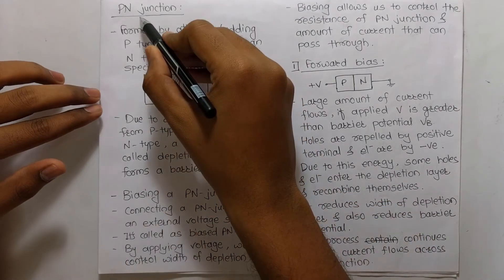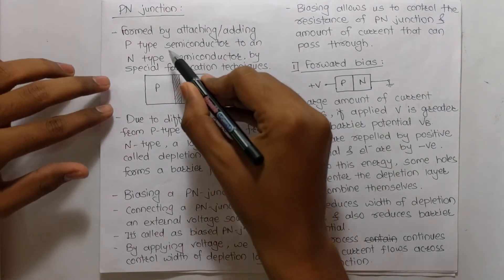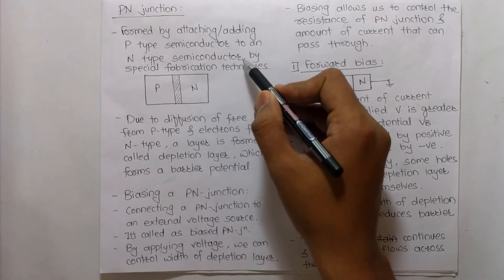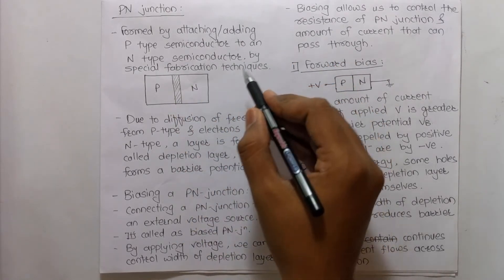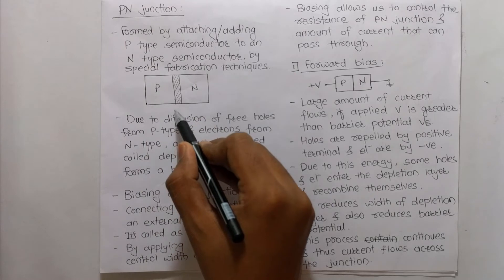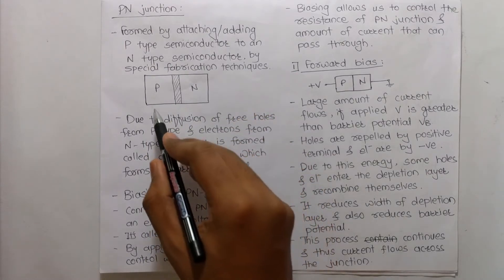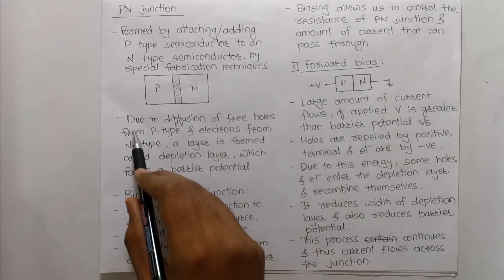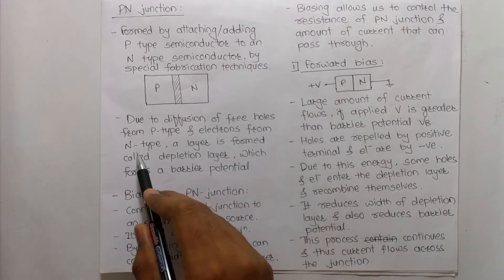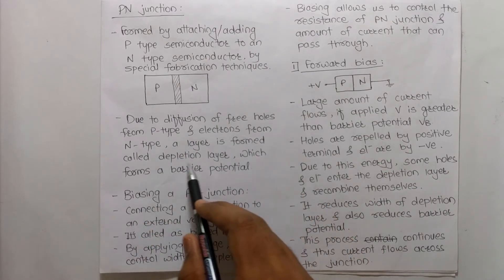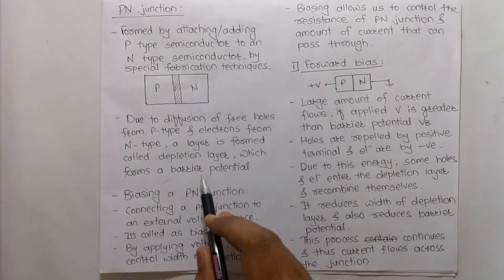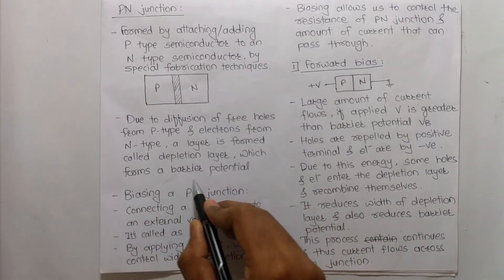A P-N junction is formed by attaching a P-type semiconductor to an N-type semiconductor using special fabrication techniques. Symbolically we can show a P-N junction as a diagram. Due to diffusion of holes from the P-type and electrons from the N-type, a depletion layer is formed. This depletion layer creates a barrier potential.